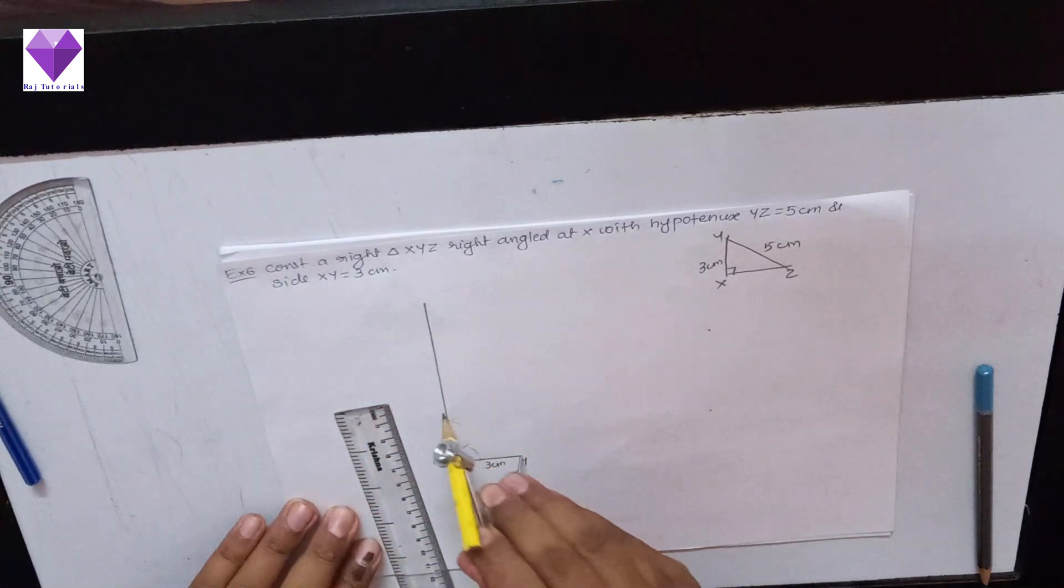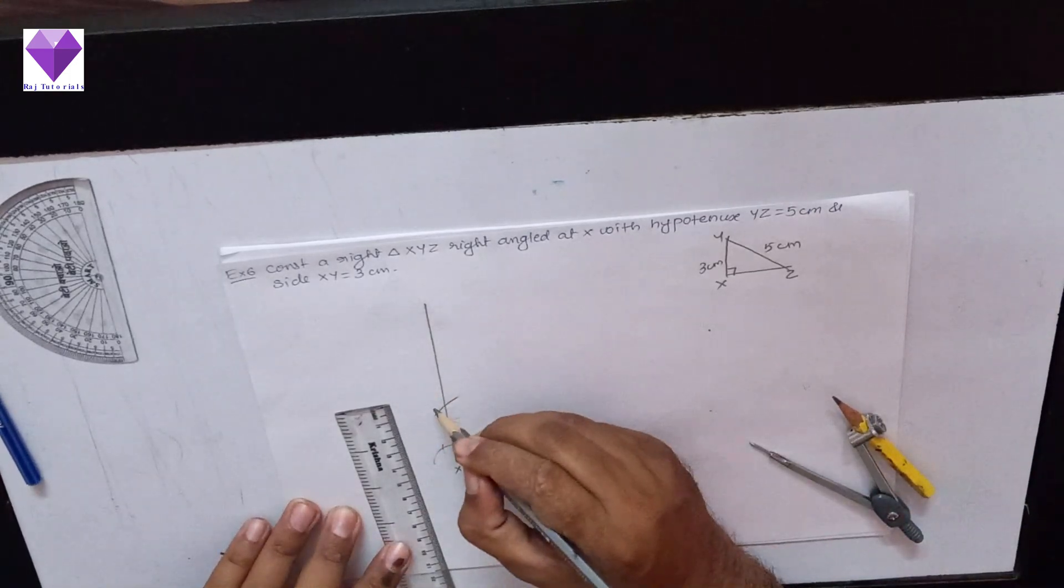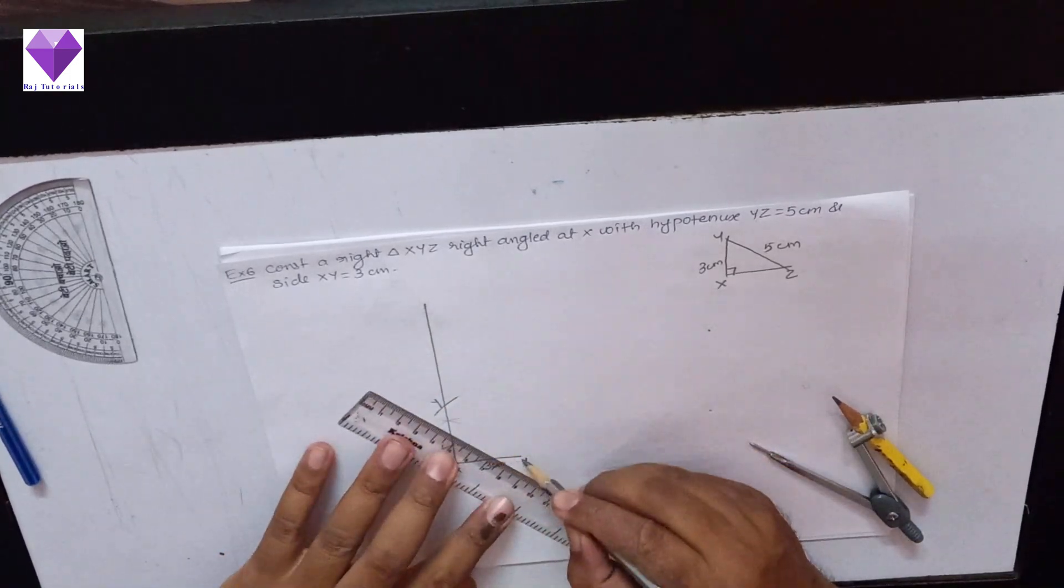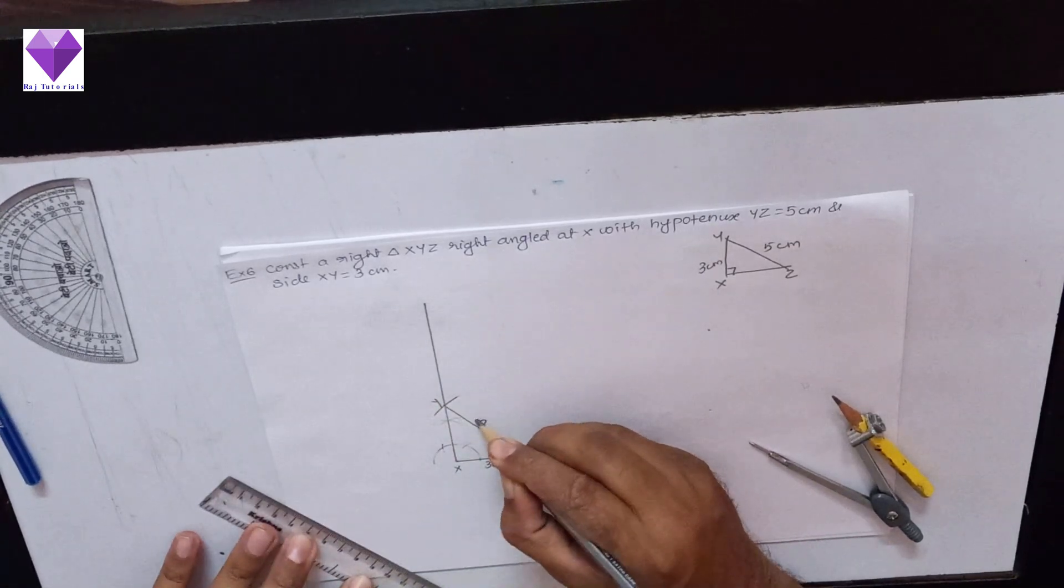With Y as center and radius 5 cm I am putting a cut here. So that is my Y point. Now I will join my ZY which is equal to 5 cm.